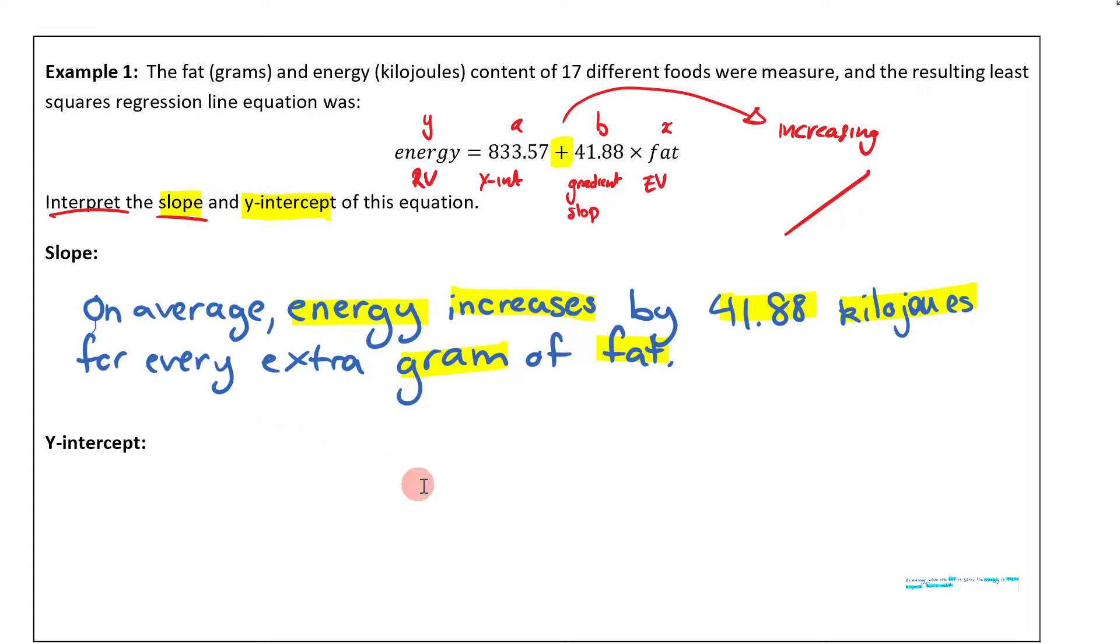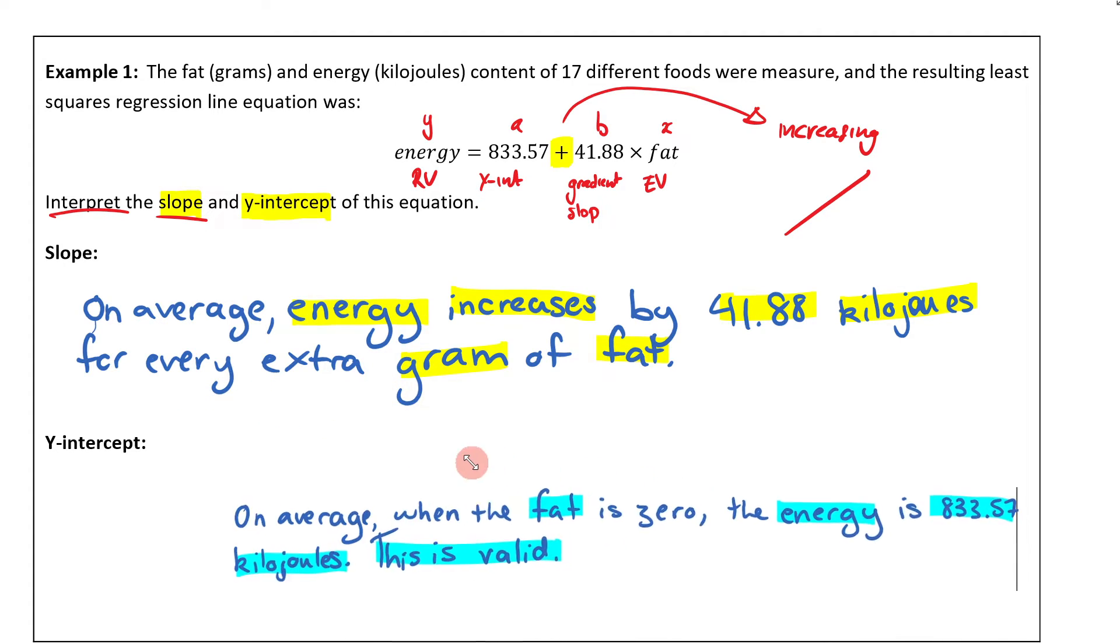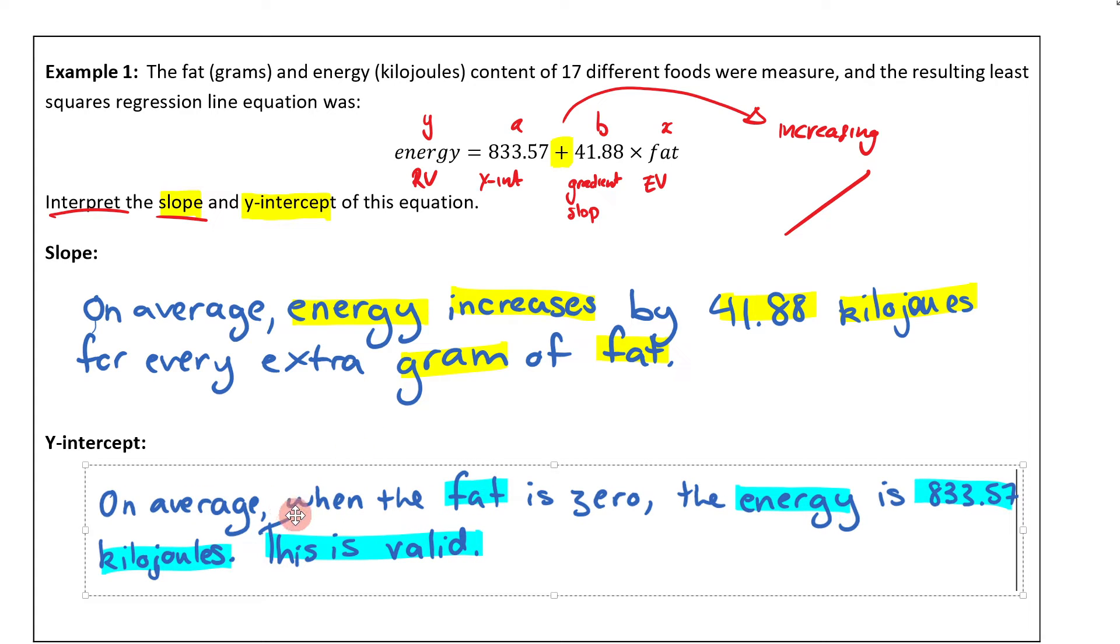Then we have to talk about the y-intercept. Let's bring this open. On average, when the fat is zero, the energy is 83.57 kilojoules. This is valid.